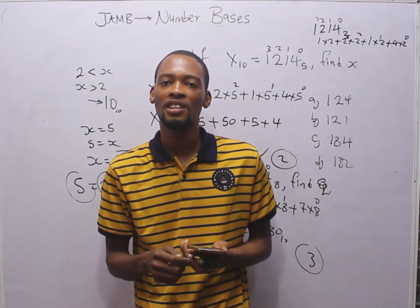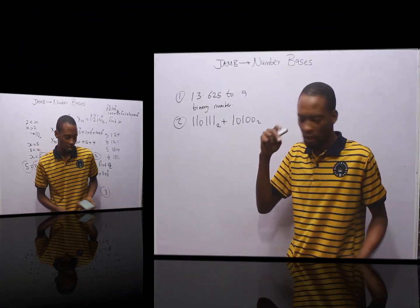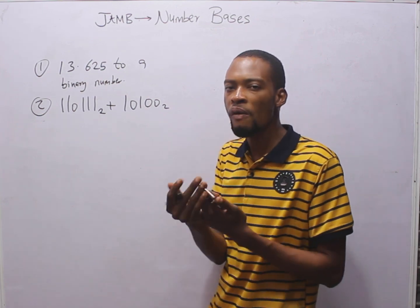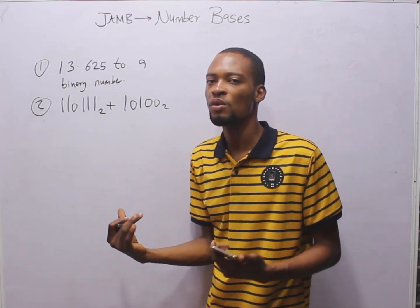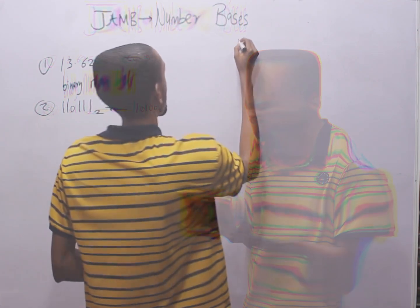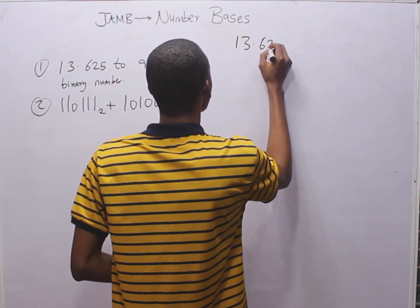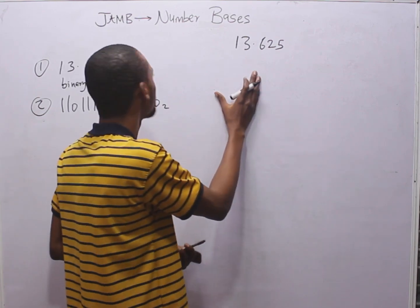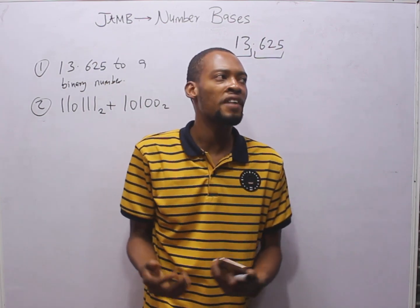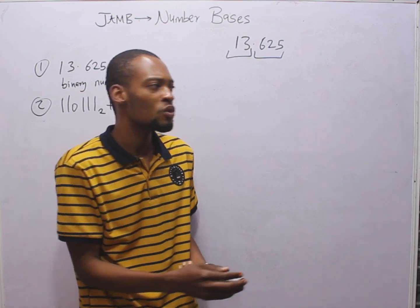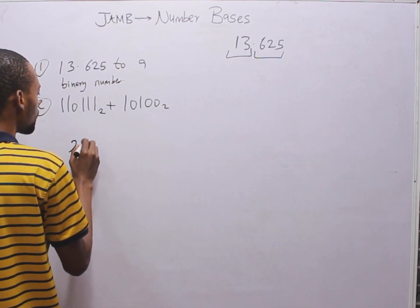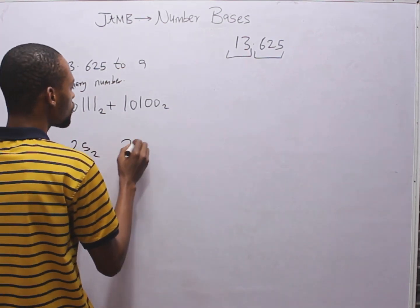Now let me solve the other common types of number bases questions. Looking at this number — there is no base written, so we assume it is decimal (base 10). Convert 13.625 to a binary number. This number has a whole number part and a decimal part. You may not be familiar with solving number base conversions with decimals — for example, converting 25 to base 2 or comparing 25 to base 3.